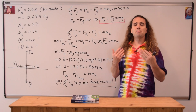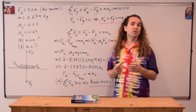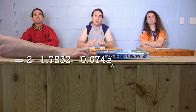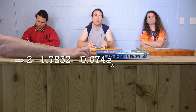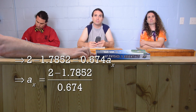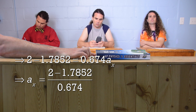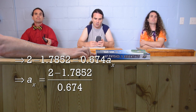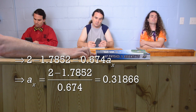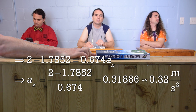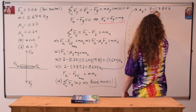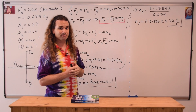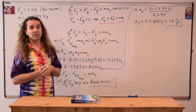Bobby, could you please answer part B — what is the acceleration of the book? We have an equation right there for acceleration, so let's solve that. Divide both sides by 0.674, and we get acceleration equals 2 minus 1.7852 divided by 0.674, which gives us 0.31866, or with two sig figs, 0.32 meters per second squared. And unfortunately, this is incorrect. I need to know why this is incorrect.